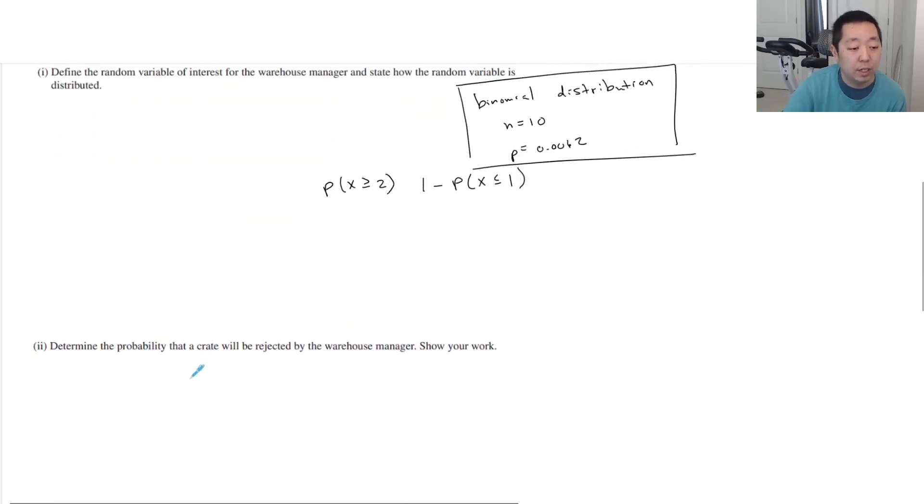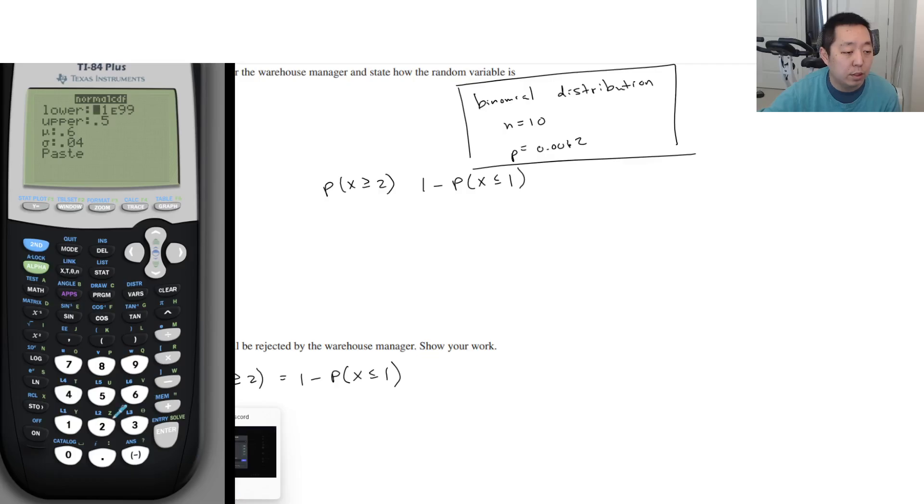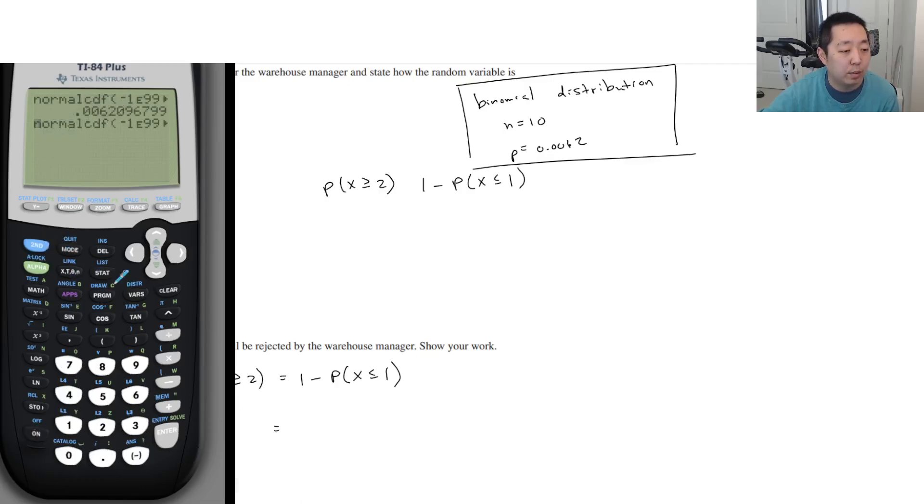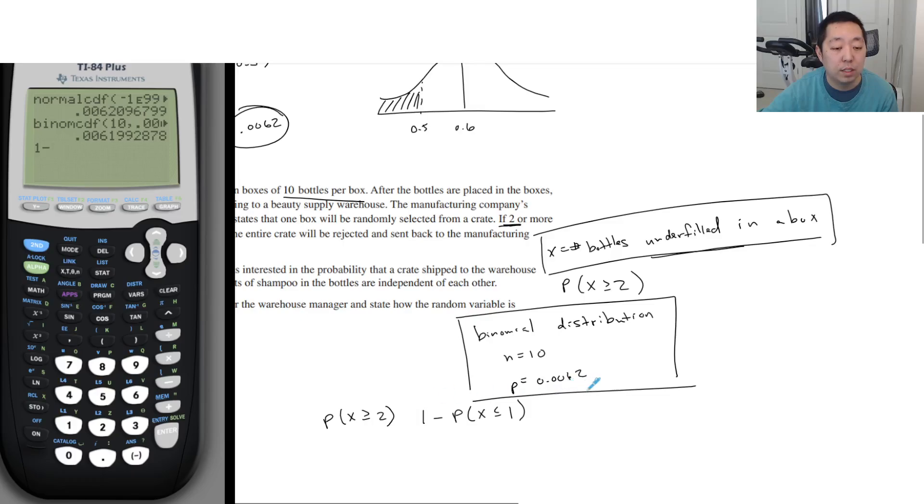Determine the probability. So here we would do the probability x is greater than or equal to two, which equals one minus probability x is less than or equal to one. Why do I do less than or equal to? Because that's how binomial CDF works. If you have one that does an upper and lower bound, you can certainly do that. But binomial CDF: 10 trials, 0.0062, the x value is one. So this is the probability that is less than or equal to one, and then I do one minus that.